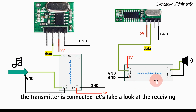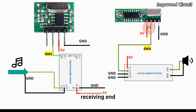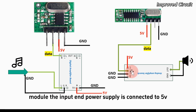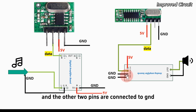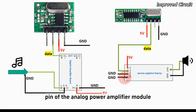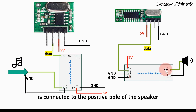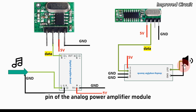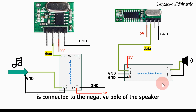At the receiving end, the data pin of the receiving module is connected to the signal input pin of the analog amplifier module. The input power supply is connected to 5V, and the other two pins are connected to GND. The signal output pin of the analog power amplifier module is connected to the positive pole of the speaker, and the signal output GND pin is connected to the negative pole of the speaker.